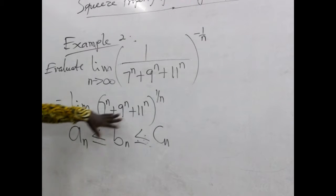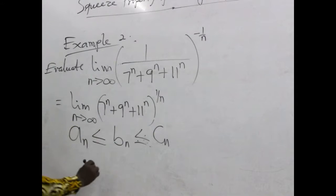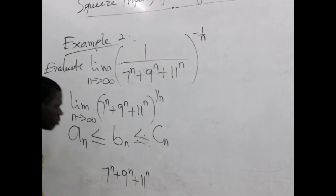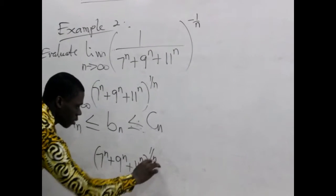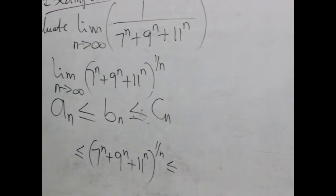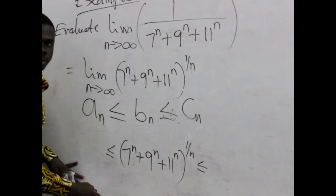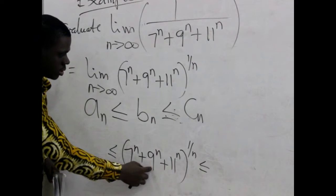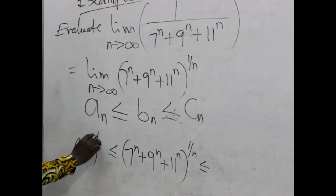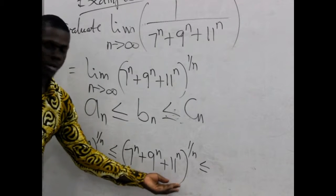We have to create two other sequences from this one. We write the middle sequence: 7 to the power n plus 9 to the power n plus 11 to the power n. We place it between two bounds. For the lower bound, we bring 11 to the power n — just 11^n plus 11^n — so that we agree this lower bound is less than or equal to what we have in the middle.